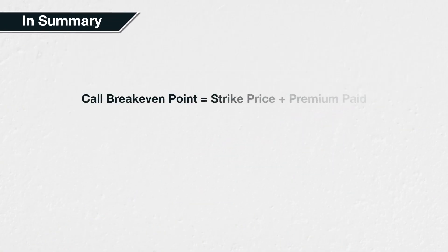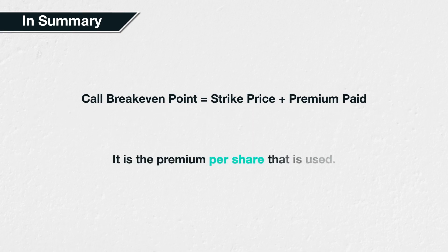In summary, the break-even point of a call option can be calculated as the strike price plus the premium paid for the option. Remember to use the per share value for the premium paid, not the total premium.